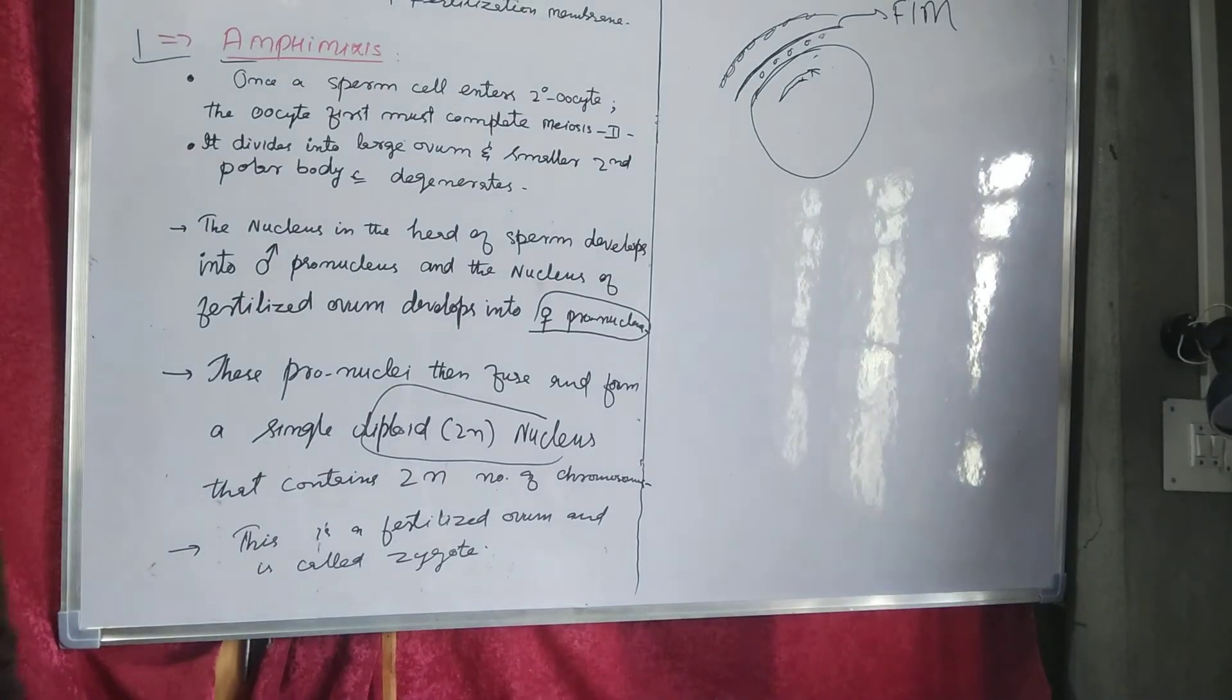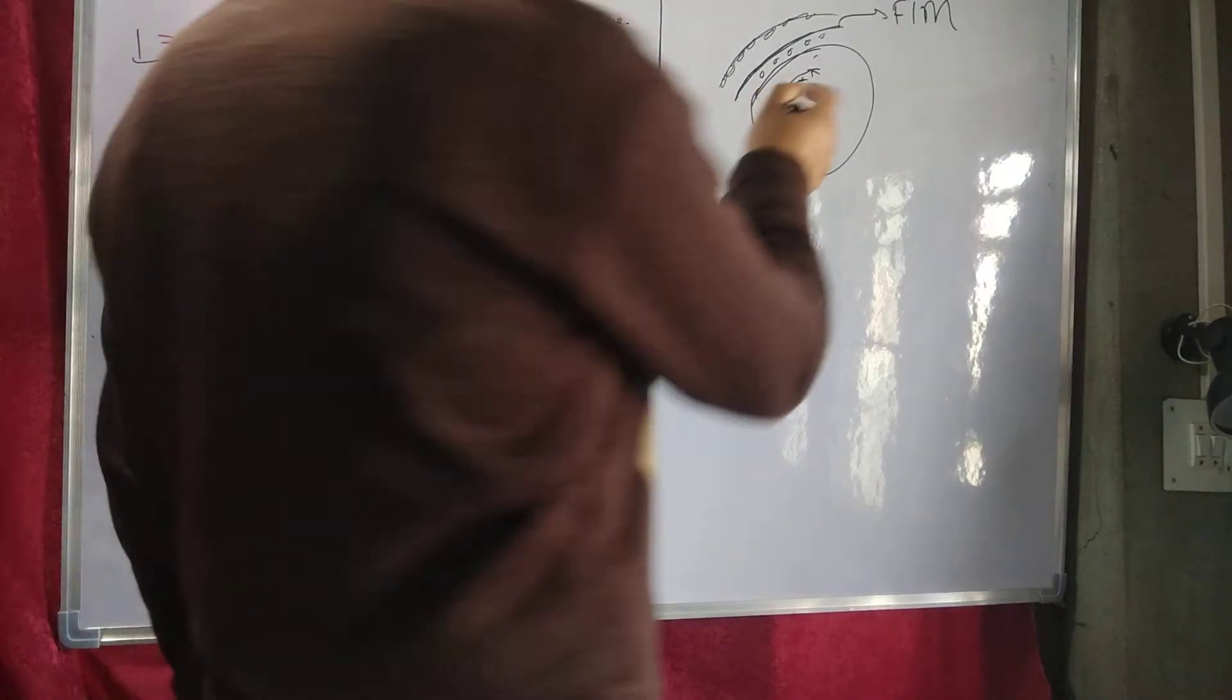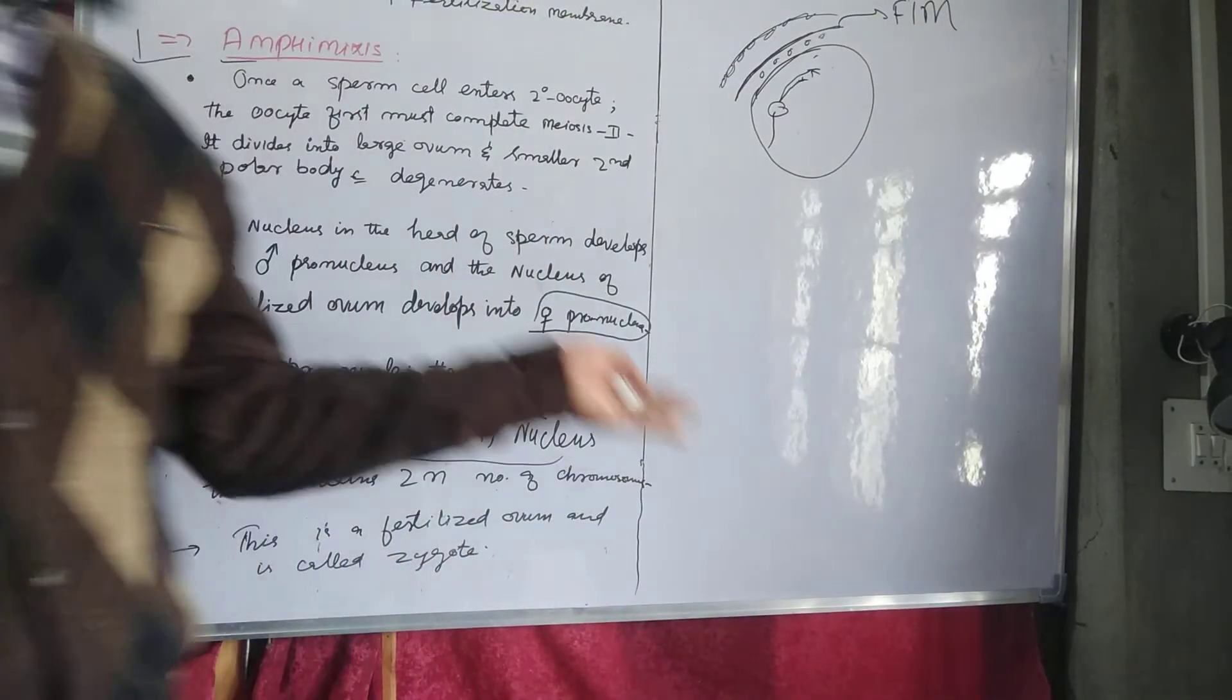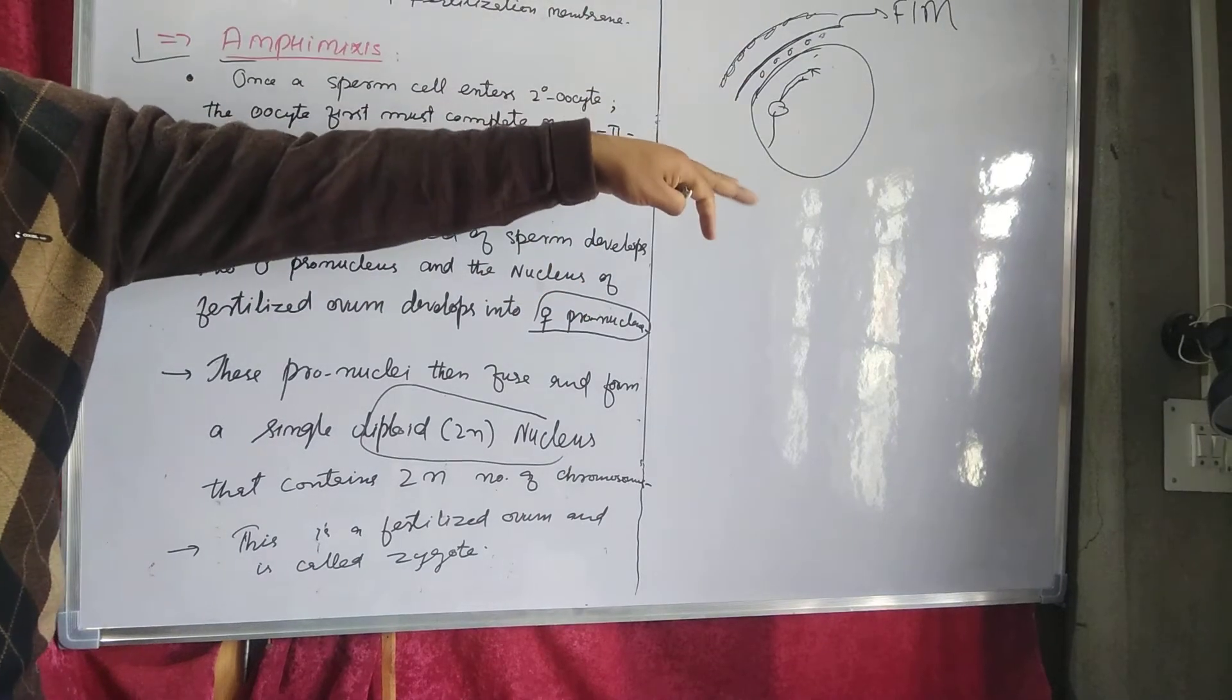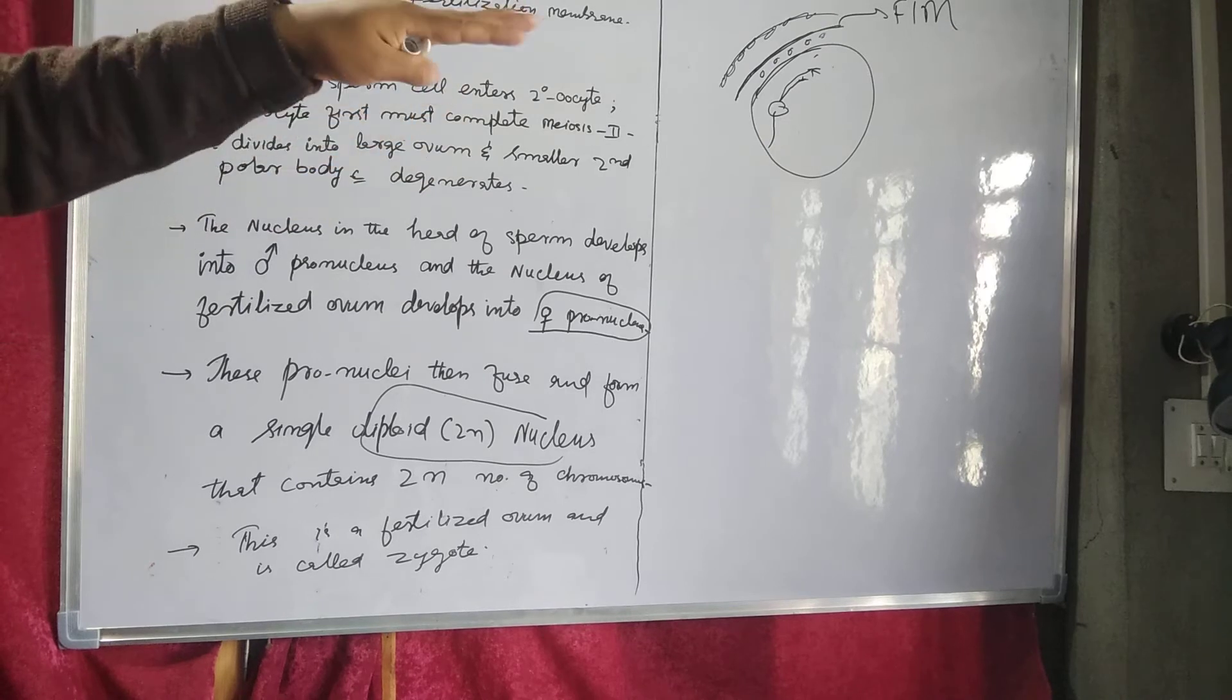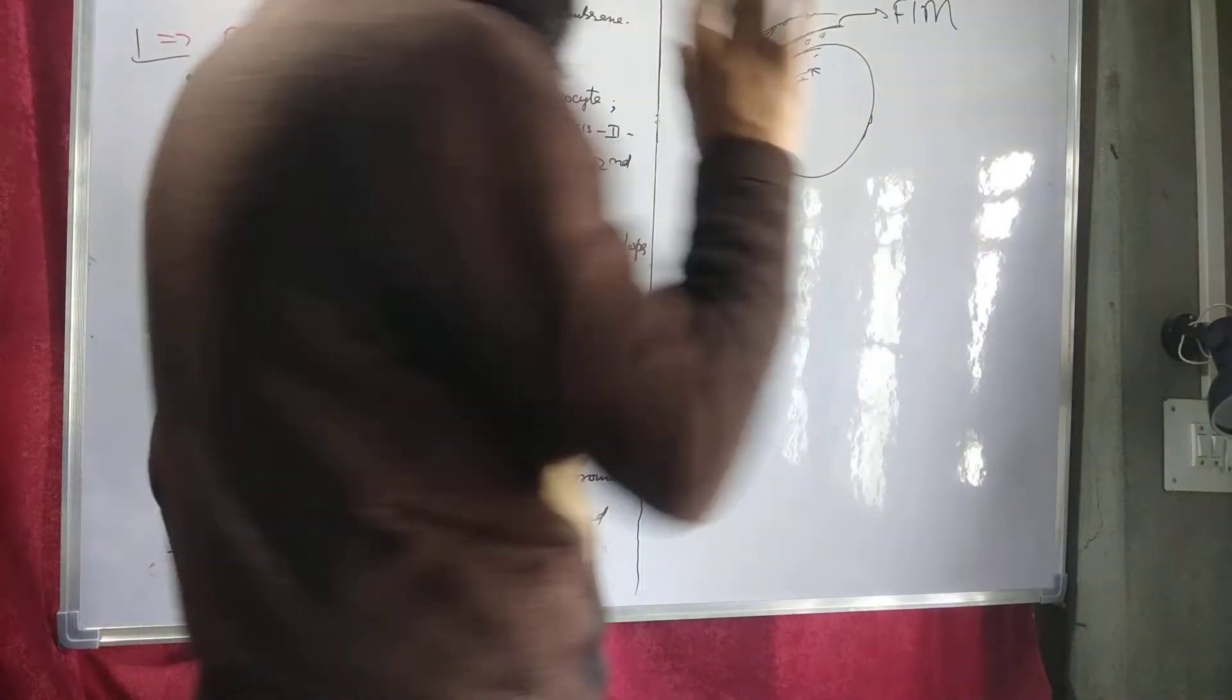Once the sperm has entered into the secondary oocyte, the sperm is now inside the secondary oocyte as part of the fertilization process.